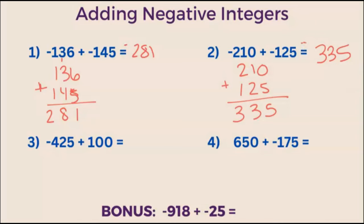Example 3. What is negative 425 plus 100? In this example, we're going to add a negative integer with a positive integer. Adding positive integers together gives you a positive answer. Adding negative integers together gives you a negative answer. But what happens when you add a positive and a negative integer together?